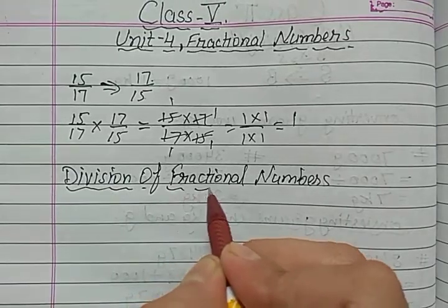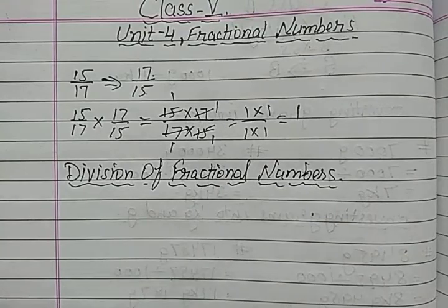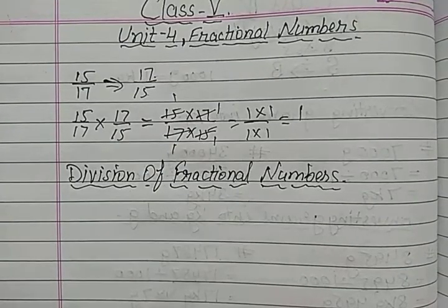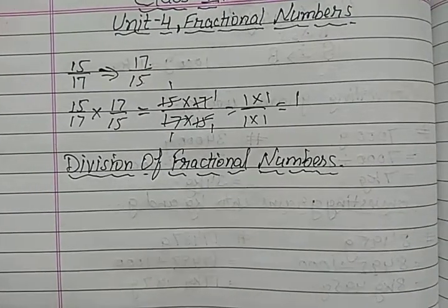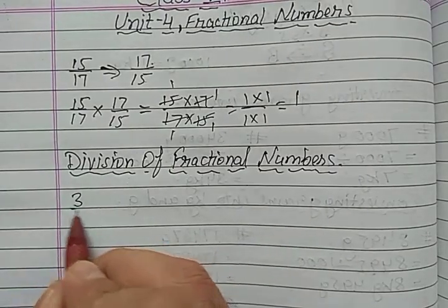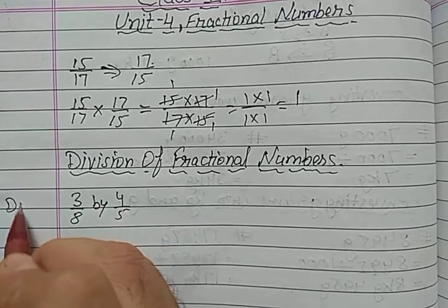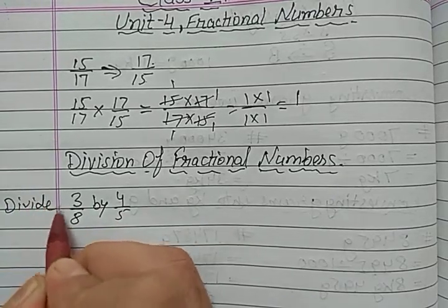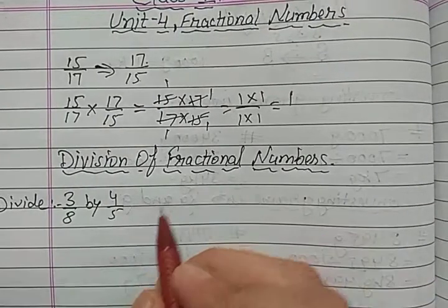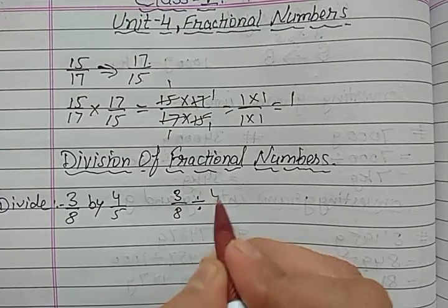I hope all of you remember how to multiply the given fractions. Let us take an example. Suppose we want to divide 3 upon 8 by 4 upon 5. In mathematical form we will write it as 3 upon 8 divided by 4 upon 5.